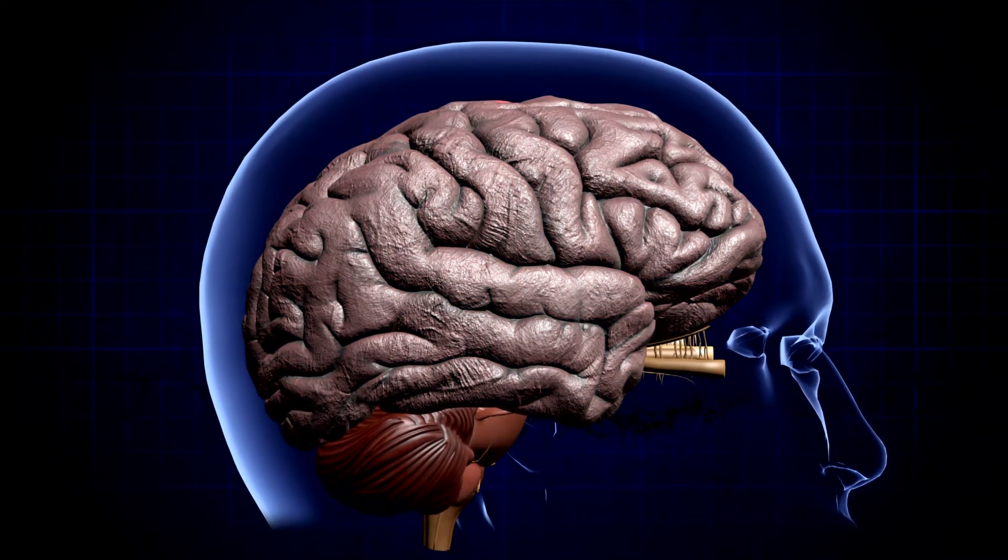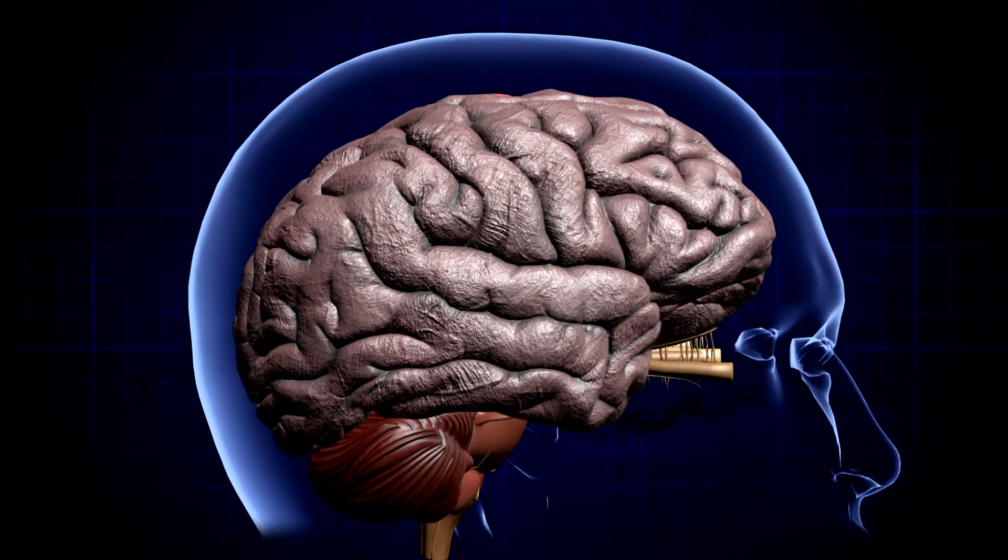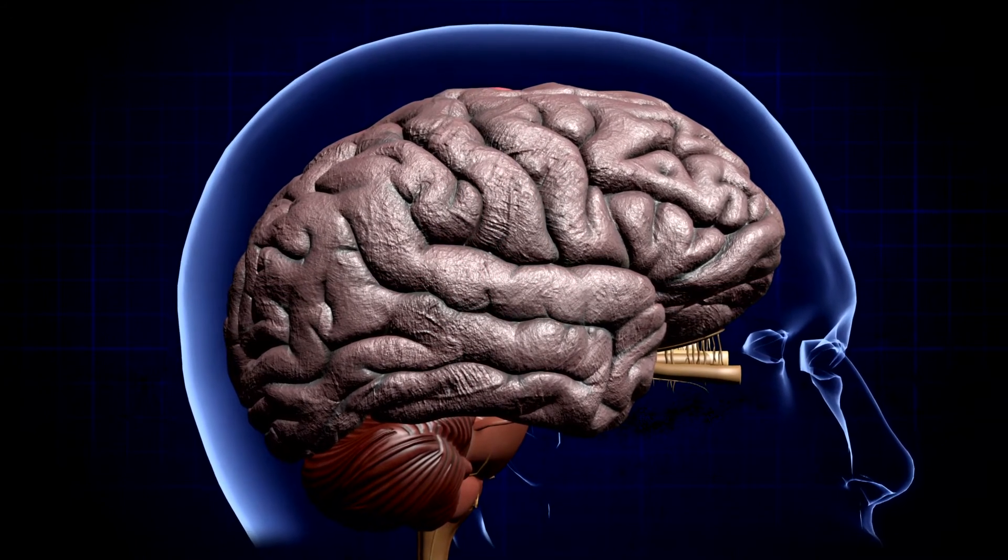As these cells begin to die, the brain shrinks and memory and motor skills, what controls the body's motion, are lost. What we're trying to do is look at how do you protect the cells at its base level, how do you protect the cells from dying.